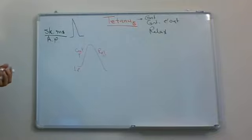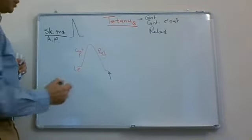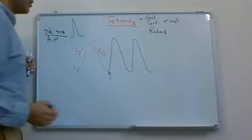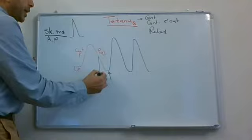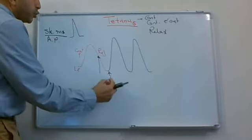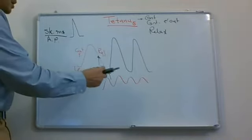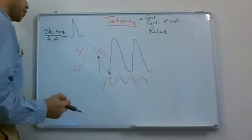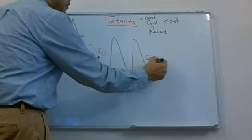If the skeletal muscle is stimulated after relaxation, it has no refractory period, and in this situation the skeletal muscle can produce further twitches — another contraction and relaxation. We name this first situation as separate twitches.